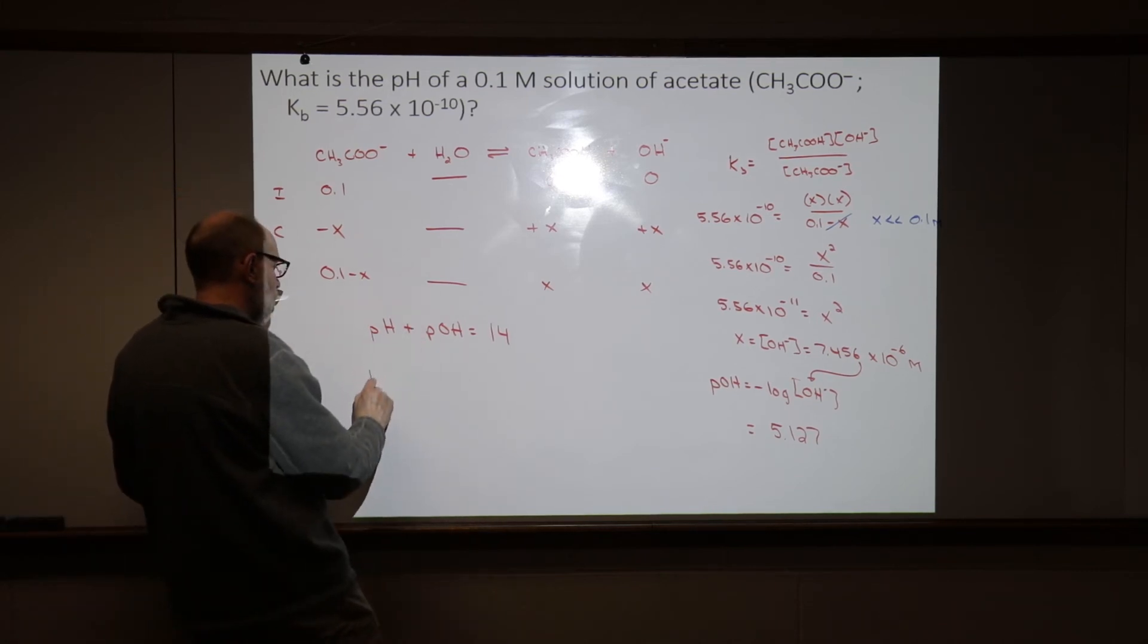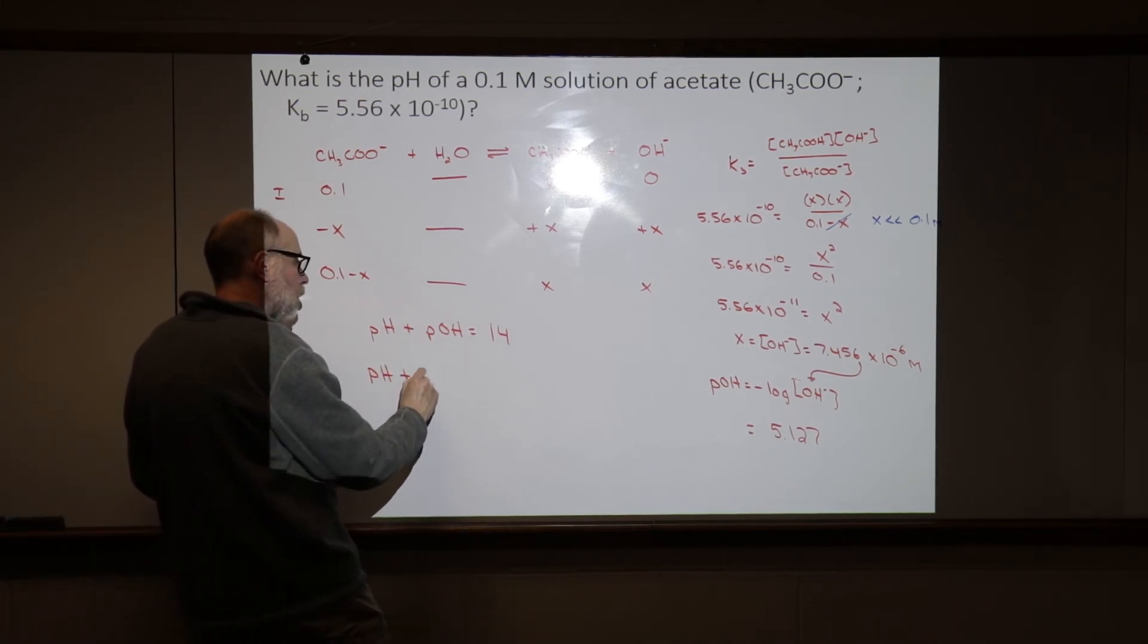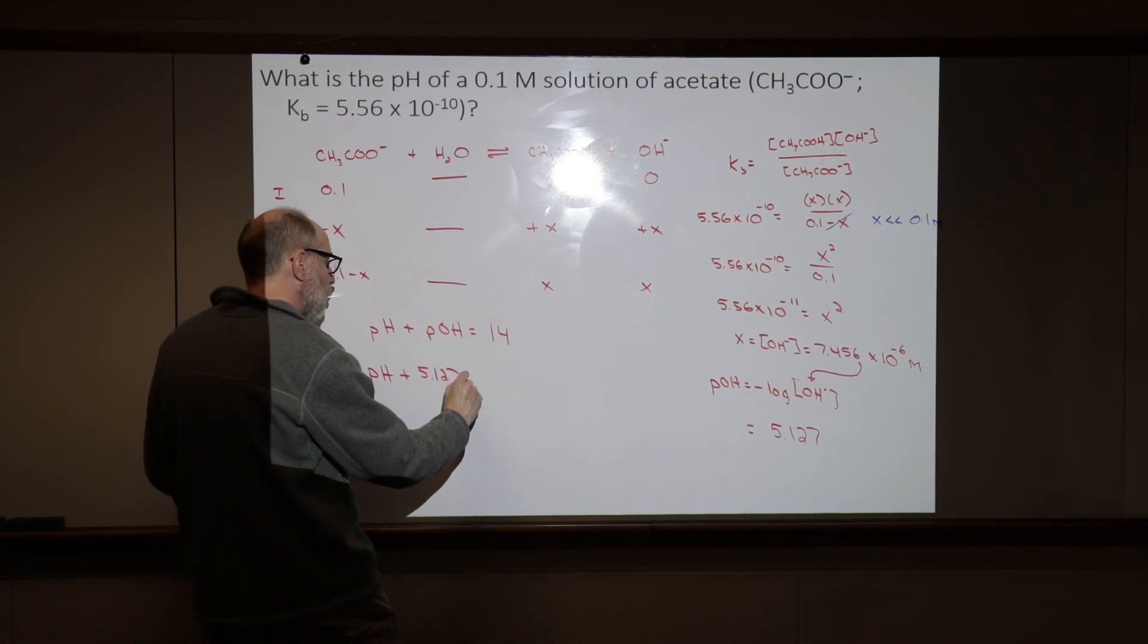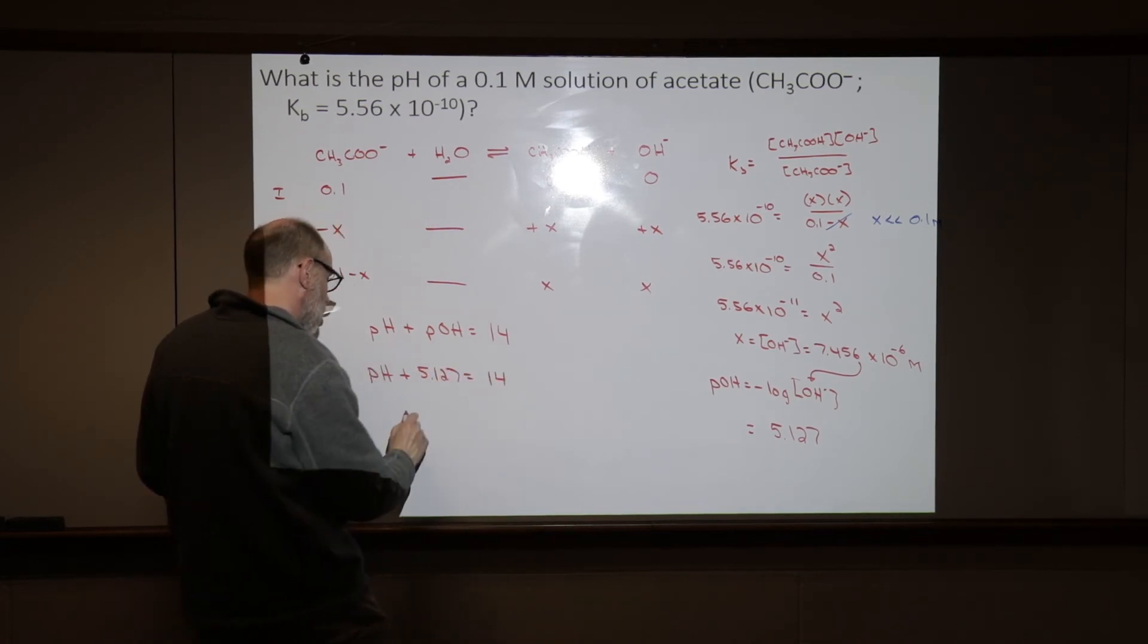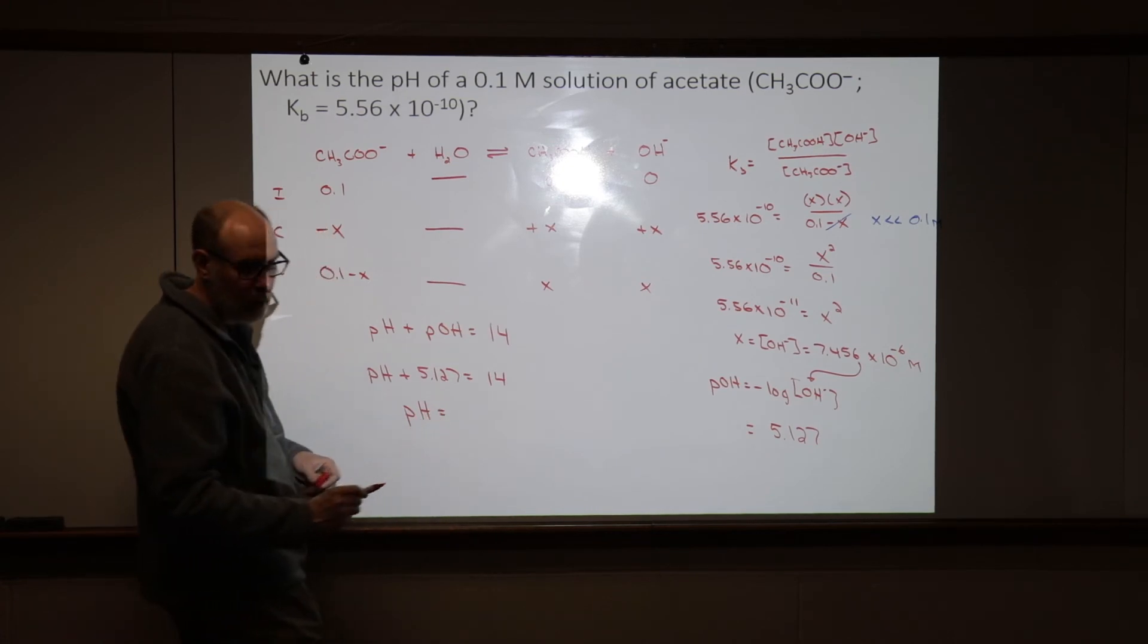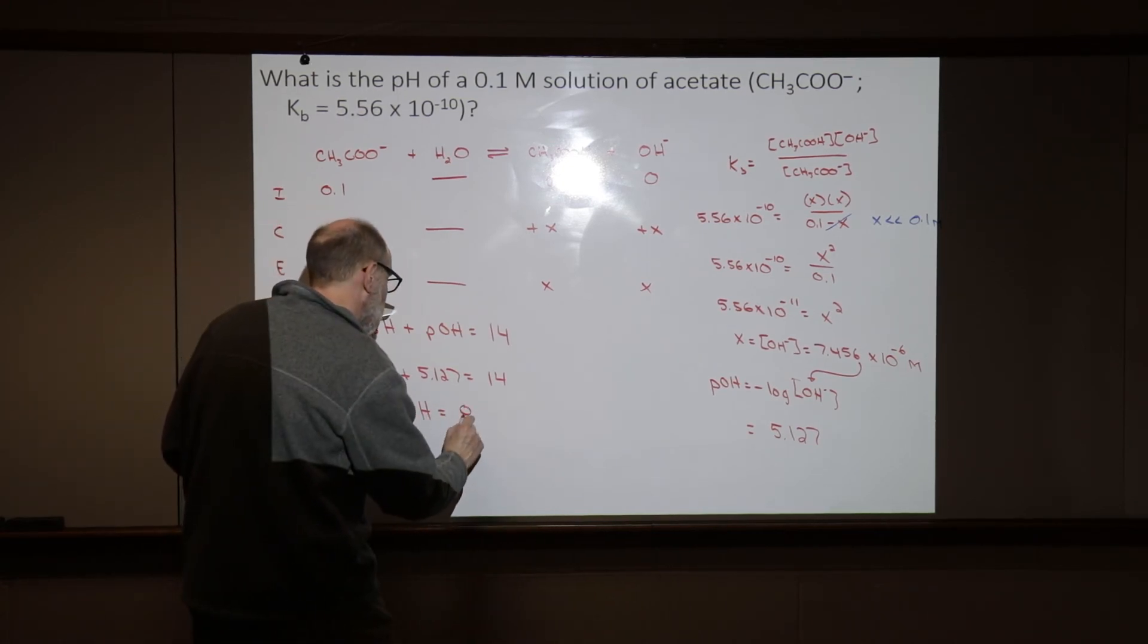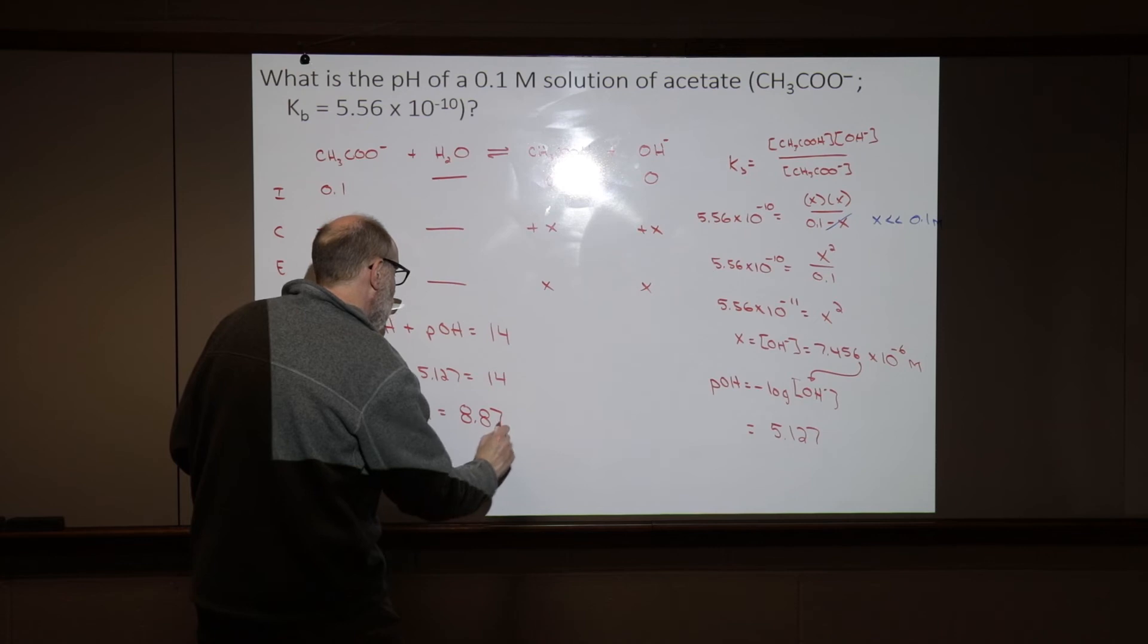And the pH plus the pOH add up to equal 14. So, if we know the pH, the pH plus 5.127 equals 14, then the pH of this solution must be 8.87.